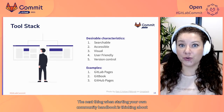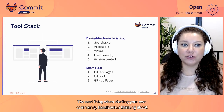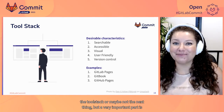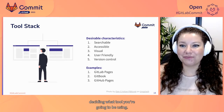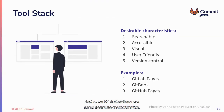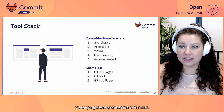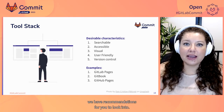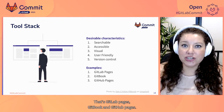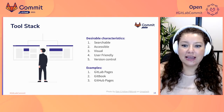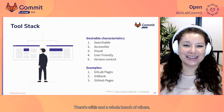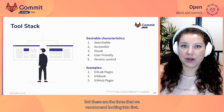An important part of starting your community handbook is deciding on your tool stack. We think there are some desirable characteristics: the tool should be searchable, accessible, visual, user-friendly, and have some form of version control. Keeping those characteristics in mind, our recommendations are GitLab Pages, Gitbook, and GitHub Pages — though there are lots of other documentation tools like wikis.